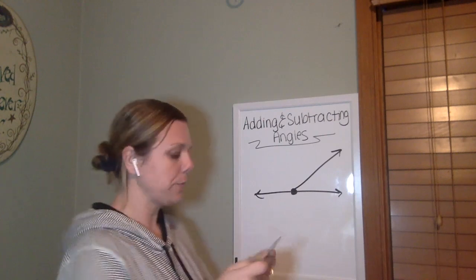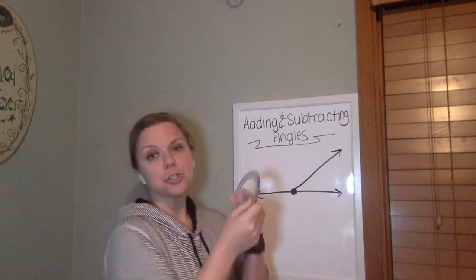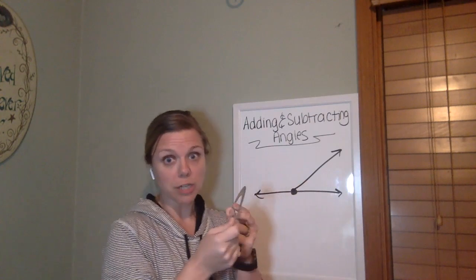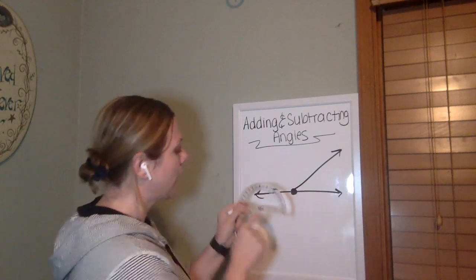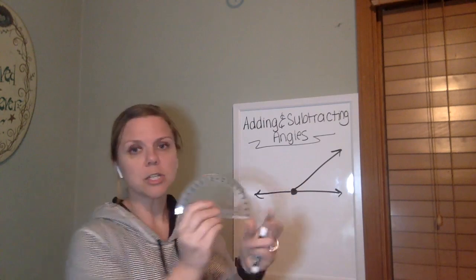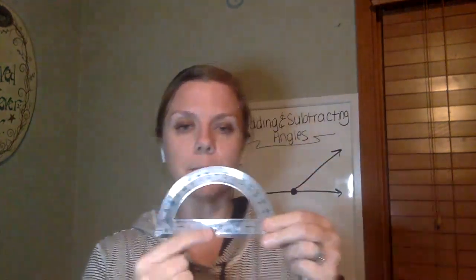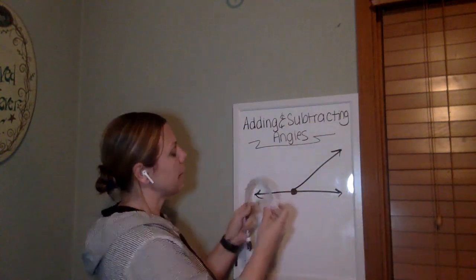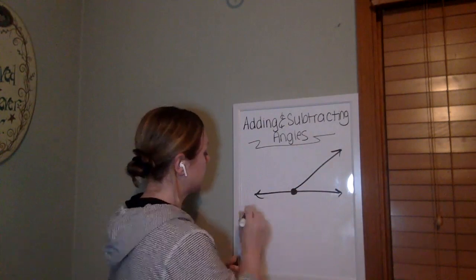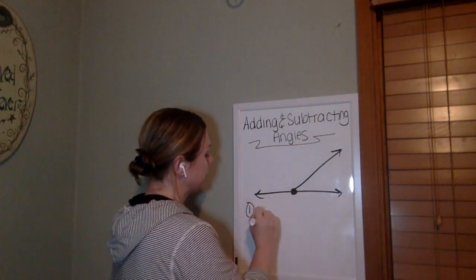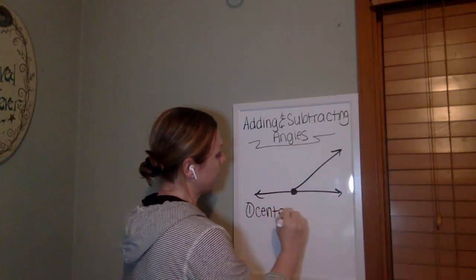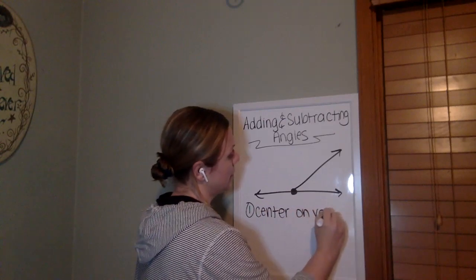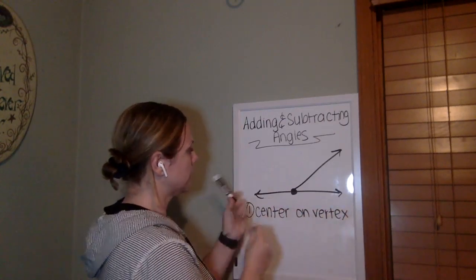So I'm just going to show you how to set it up with a protractor though, so that you've seen it. This little middle part of the protractor, some protractors actually have a little hole there. Sometimes there's this little crosshatch there. And we're going to always put that on our vertex. So we're going to center on our vertex. That's always, always, always going to be first.